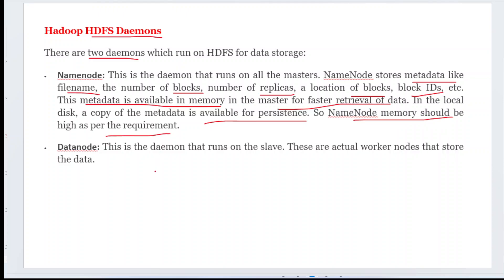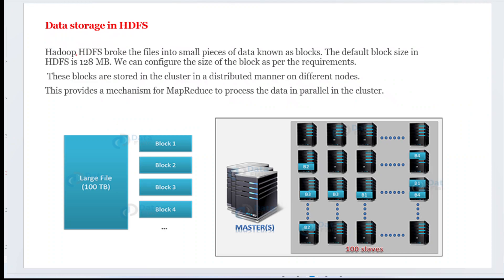A local disk copy of the metadata is also available for persistence. The name node memory should be high as per requirements. The data node daemon runs on the slave nodes — these are the actual worker nodes that store the data. Those are the two daemons we have in Hadoop HDFS.